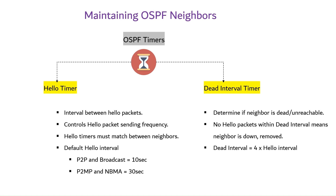The dead interval is a configurable interval in seconds and defaults to four times the value of the hello interval. When the hello interval is 10 seconds, multiplying by four gives a dead interval of 40 seconds.